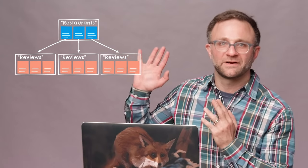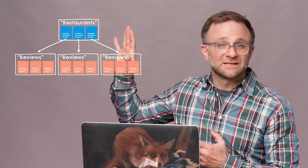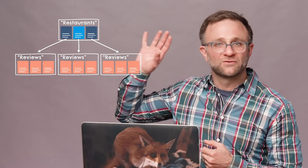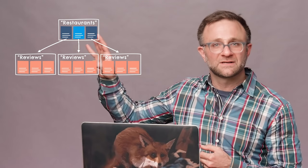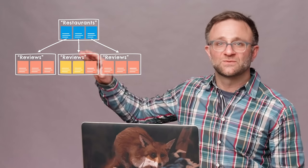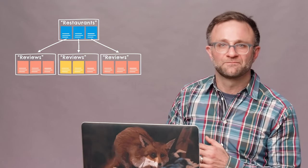Let's take a look at my hypothetical restaurant review app. If I want to find all restaurants in a specific zip code, I can totally do that — that would be a matter of querying for specific documents in my restaurant collection. Similarly, if I wanted to find all four-star reviews for Todd's Tacos, I could totally do that too. I'd just be looking for documents within the reviews sub-collection of this specific restaurant.